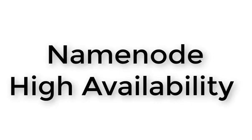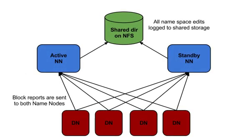In Hadoop 2.0, we can have multiple name nodes. One will be in the active state and the second will be in the standby state. If the active one goes down, the standby is automatically converted into the active state. This is done with the help of a failover controller — specifically the ZooKeeper failover controller, which I will show you later in detail.